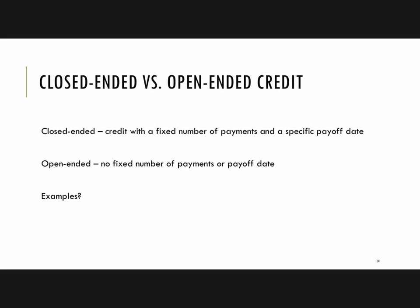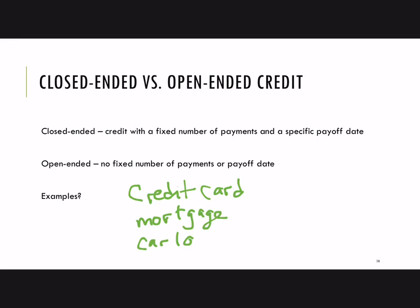Let me give you some options and see if you can guess which one it is. A credit card — that's one example. A mortgage, a car loan, and here's one that may be less familiar: a Ready Cash loan.